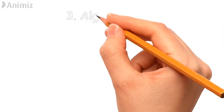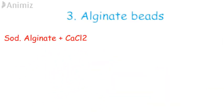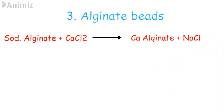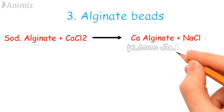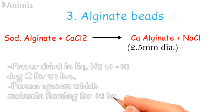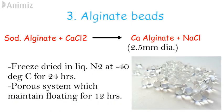The third system is alginate beads, where a solution of sodium alginate is dropped onto an aqueous solution of calcium chloride to form calcium alginate beads. These beads have a diameter of 2.5 mm. They are freeze dried in liquid nitrogen at minus 40 degrees Celsius for 24 hours, forming porous systems which maintain floating time for 12 hours.